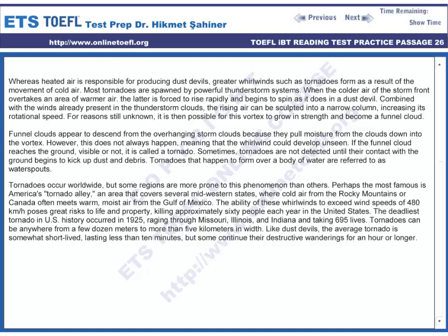Sometimes tornadoes are not detected until their contact with the ground begins to kick up dust and debris. Tornadoes that happen to form over a body of water are referred to as water spouts. Tornadoes occur worldwide, but some regions are more prone to this phenomenon than others. Perhaps the most famous is America's Tornado Alley, an area that covers several mid-western states, where cold air from the Rocky Mountains or Canada often meets warm, moist air from the Gulf of Mexico. The ability of these whirlwinds to exceed wind speeds of 480 km per hour possesses great risk to life and property.